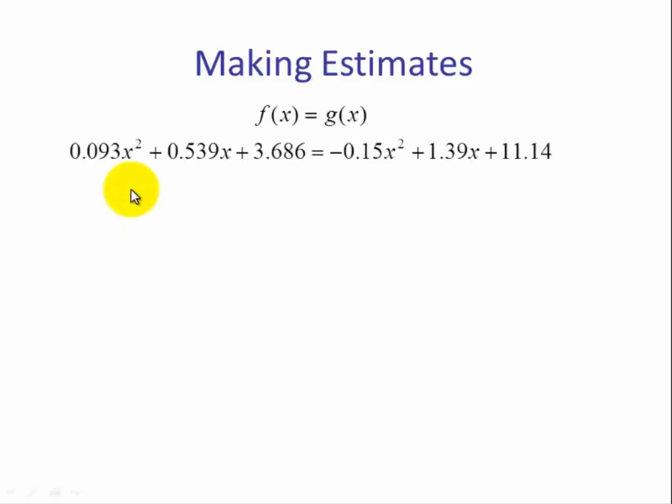To find these points of intersection algebraically, we use substitution. We set the two quadratic equations equal to each other, so we have f equals g. This is an equation with only one variable. Moving all three values on the right-hand side to the left-hand side gives us a quadratic: 0.243t squared minus 0.851t minus 7.454 equals zero. This tells us what our values of a, b, and c are.